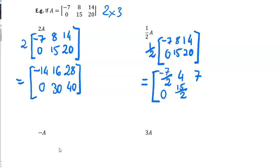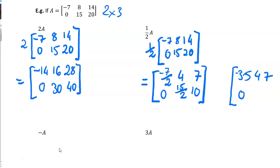And half of twenty is ten. You could write these as fractions or sometimes as decimals — so negative three point five, four, seven, zero, seven point five, and ten. But it's far more usual: if you get given fractions in a question, you give fractions as answers unless told otherwise.